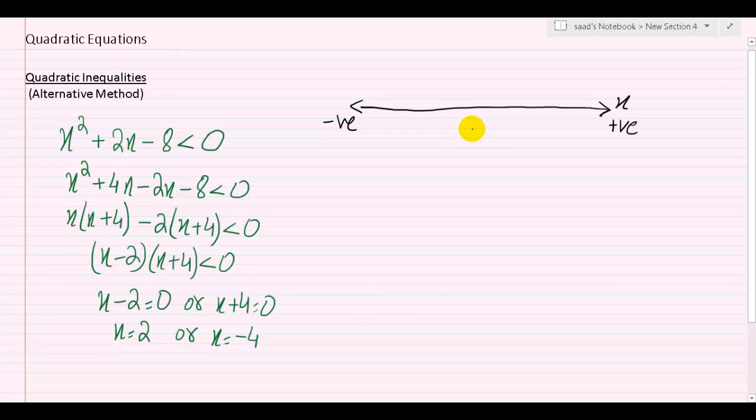Now what I want you to do is, I want you to locate these two values on the number line. So let's say we have 0 right in the center. 2 would be somewhere here. And at this point, what I want you to do is, I want you to draw a vertical line at x equals 2.